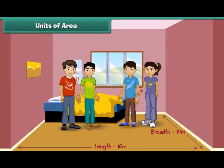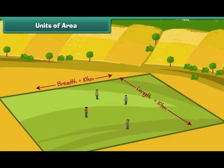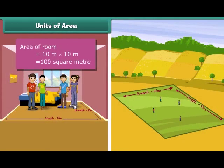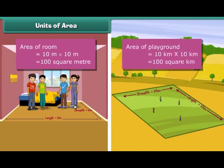How many children can stand in a square room of side 10 meters? And how many children can stand in a square playground of side 10 kilometers? It is clear that more children can be adjusted comfortably in the playground. The area of the room is equal to 100 square meters, while the area of the playground is equal to 100 square kilometers. Thus, square kilometer is a bigger unit for measuring area than square meter.